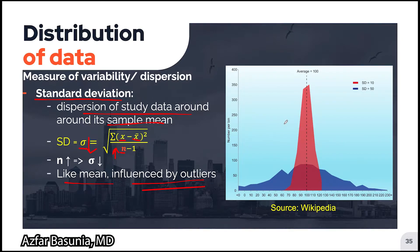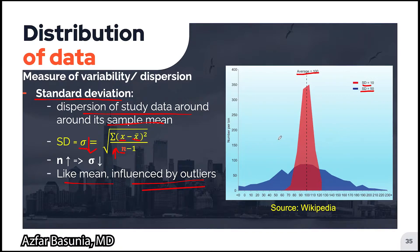Both of these normal-shaped graphs have the mean around 100. However, the standard deviation of the red curve is 10 while the standard deviation of the blue curve is 50. If we have a lot of data points, we may get something like the red curve with a lower standard deviation and a tighter fit around the mean, whereas with fewer data points we may get the blue curve with a wider standard deviation and a more spread-out curve.